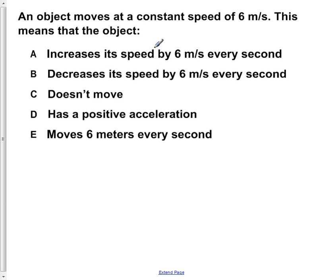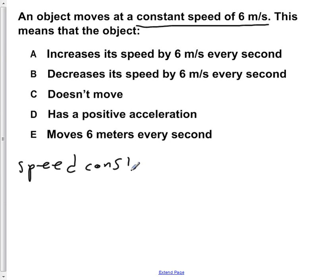We're told that our object is moving at a constant speed of 6 meters per second. If our speed is constant, then A — stating that we're increasing our speed by 6 meters every second — would be incorrect because our speed is constant. B is also wrong because it states that we are decreasing our speed by 6 meters per second every second, but we're remaining constant, so B is also wrong.